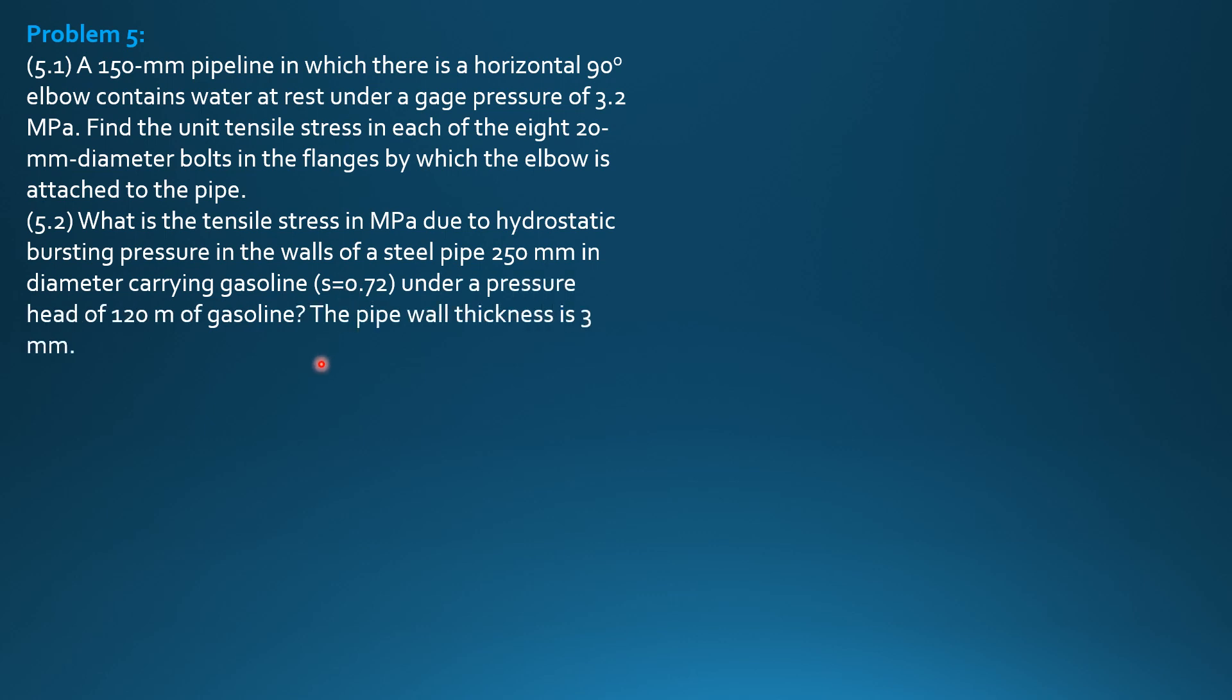Then, second situation: What is the tensile stress in megapascals due to hydrostatic bursting pressure in the walls of a steel pipe, 250 mm diameter carrying gasoline of specific gravity 0.72, under a pressure head of 120 meters of gasoline? The pipe wall thickness is 3 millimeters.